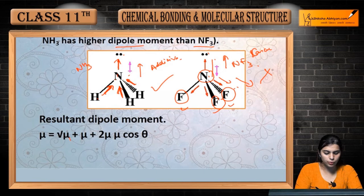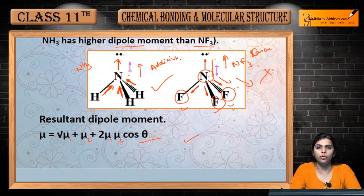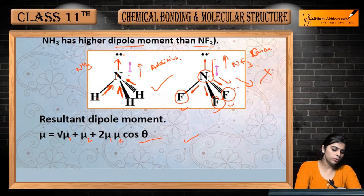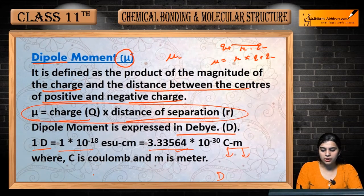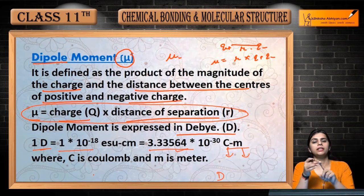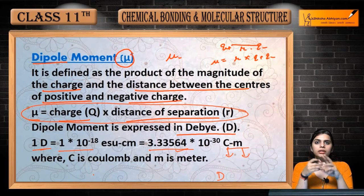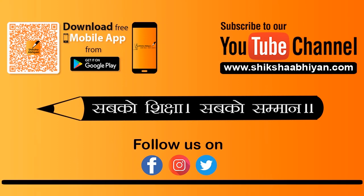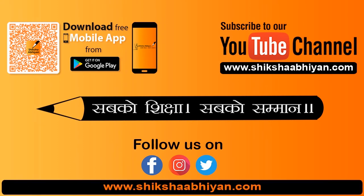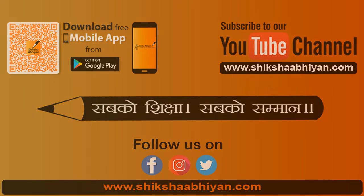The resultant dipole moment formula: mu_resultant = sqrt(mu1² + mu2² + 2·mu1·mu2·cos θ). This is our formula to calculate the resultant. The major formula used is mu = q × r (charge into distance of separation). So these were our bond parameters — bond length, bond angle, bond enthalpy, bond dissociation energy, dipole moment, and bond order — and how they all vary. We have studied all of these.